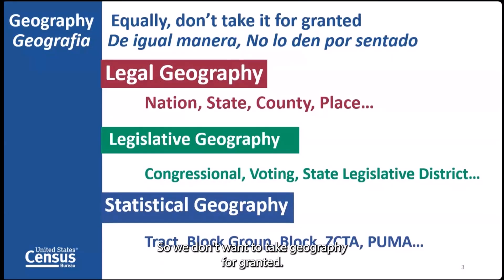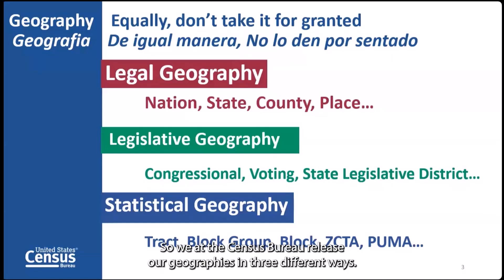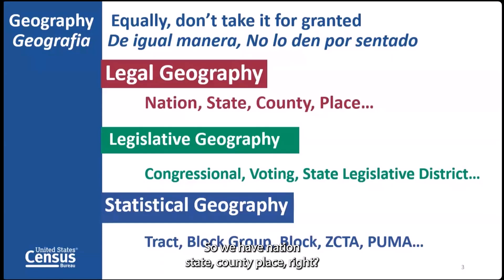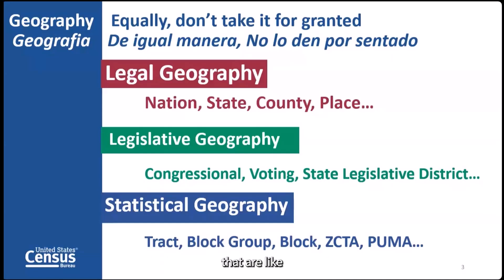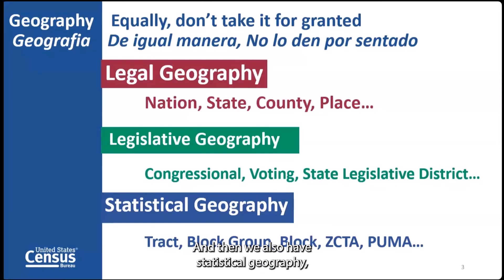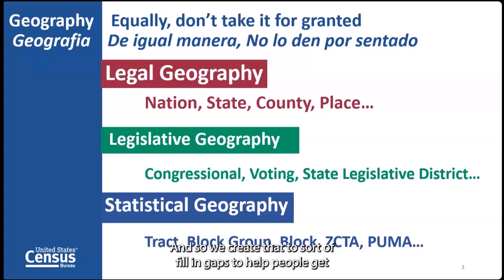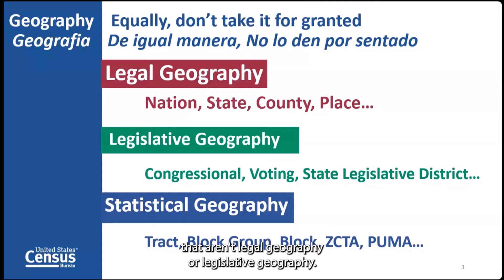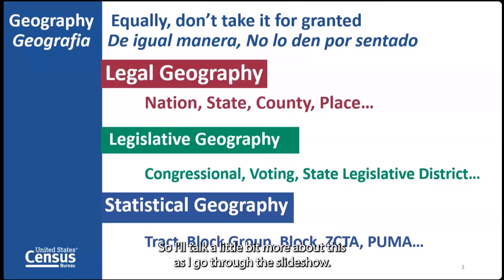We don't want to take geography for granted either. At the Census Bureau, we release our geographies in three different ways. We have legal geography: nation, state, county, place. Then we have legislative geography — congressional districts, voting districts, state legislative districts. And then we have statistical geography, which the Census Bureau created itself to fill in gaps and help people get statistics for areas that aren't legal or legislative geography.